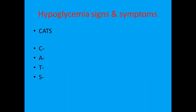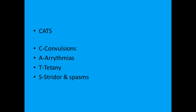Let's see the last mnemonic: hypoglycemia signs and symptoms. The mnemonic is CATS — C-A-T-S. C stands for convulsion, A for arrhythmia, T for tetany, S for stridor and spasms. Revision: convulsions, arrhythmia, tetany, stridor, and spasm.